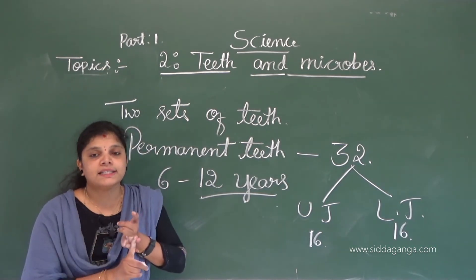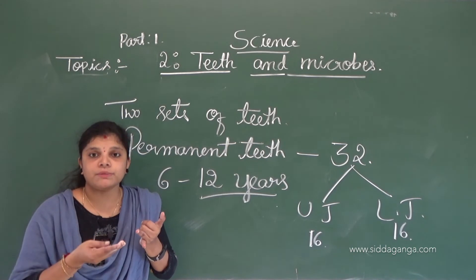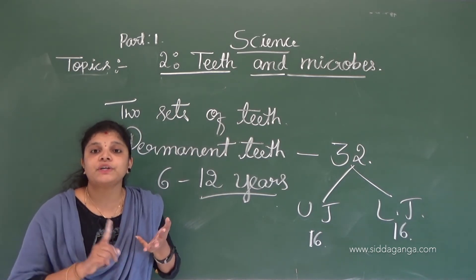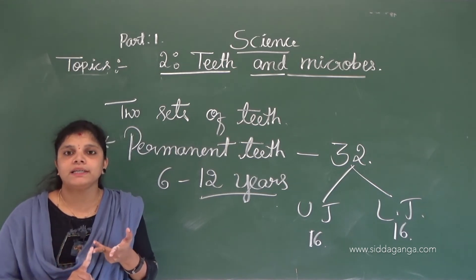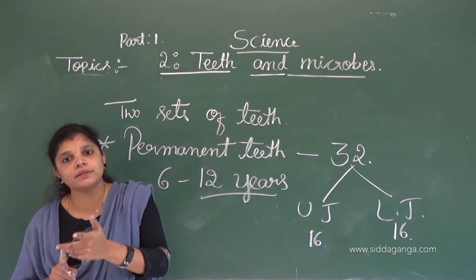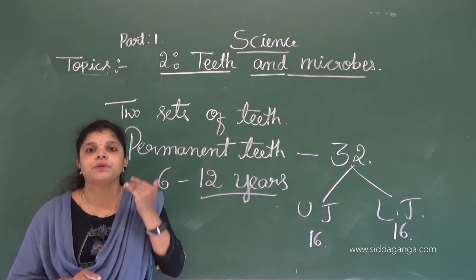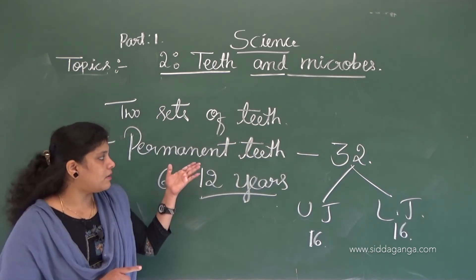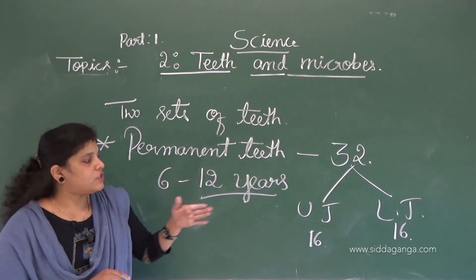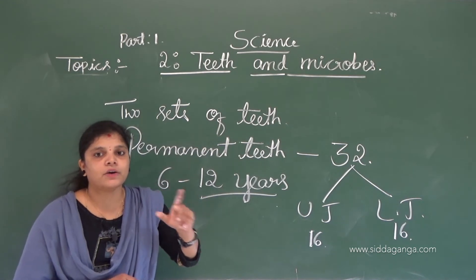So to summarize: functions of teeth — it helps to chew food, it helps to speak clearly, and it gives a decent look to the face. There are two sets of teeth: temporary teeth and permanent teeth. Temporary teeth total 20, and permanent teeth total 32, with 16 in each jaw.